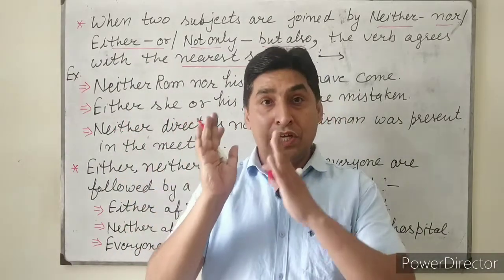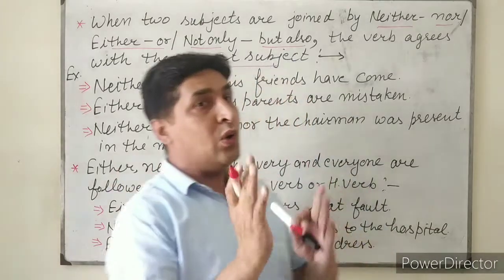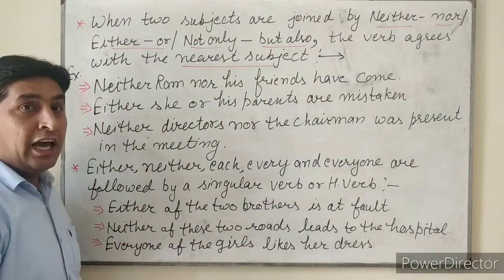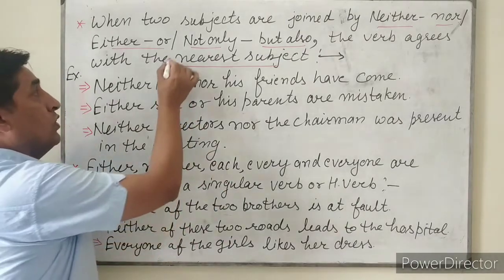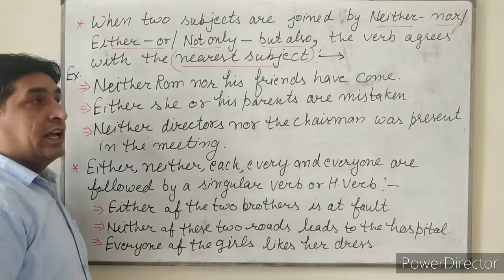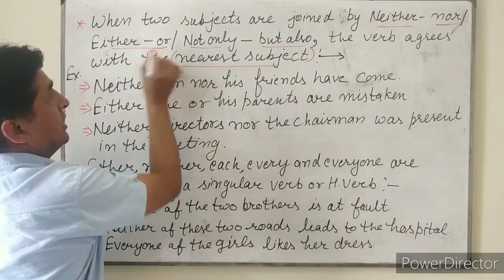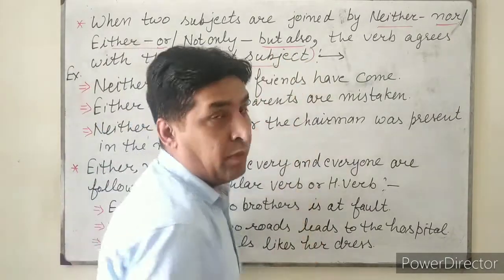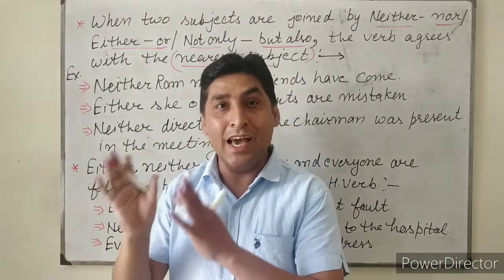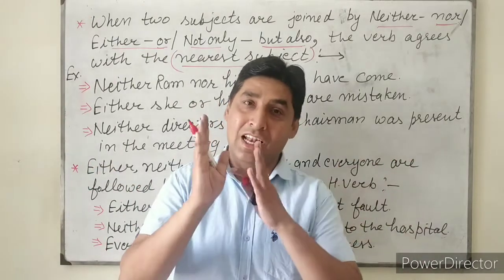जब दो या दो से अधिक subjects को 'neither...nor,' 'either...or,' या 'not only...but also' से जोड़ा जाता है, तो जो helping verb होती है वो पास वाले subject के according लगाई जाती है। यानी 'or' या 'nor' या 'but also' के बाद जोड़ा गया जैसा word होगा, उसके according verb या helping verb लगानी है।